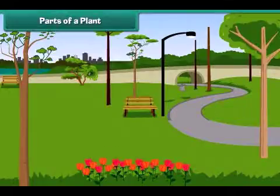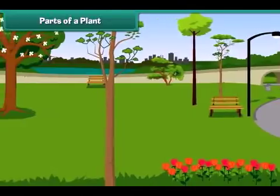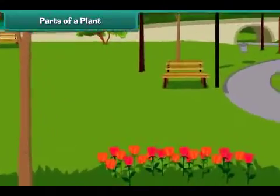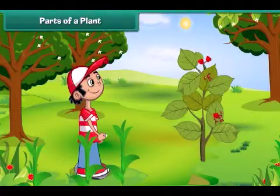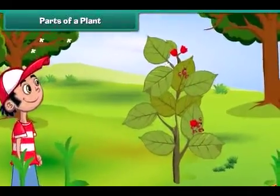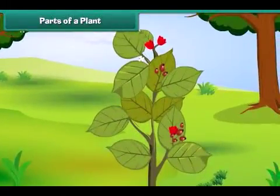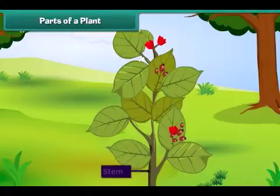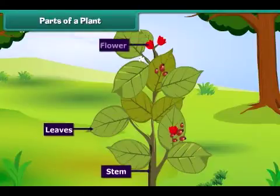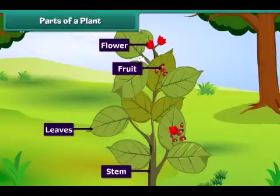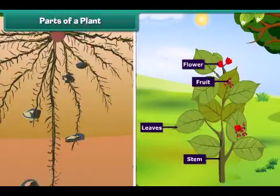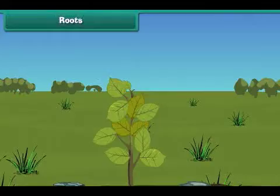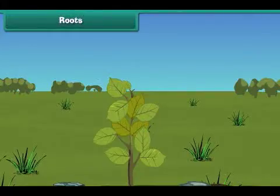Dear friends, as we can see around us, there are a lot of varieties of plants and trees. They all are green in colour and provide ease to our eyes. But have you ever observed a plant closely? You can see some of its major parts such as stem, leaves, flowers and fruits above the ground. But do you know that some part is also hidden under the ground? This part is called root. Now let's know the parts of the plant in detail.